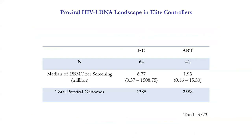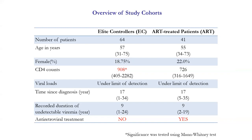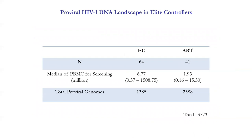Our definition of elite controller in this study is a patient with undetectable viremia for at least one year, with at most one or two viral load blips at a maximum of less than 400 copies during any blip. Most of our patients have had undetectable viral load for an average of nine years, up to 24 years, with barely any detectable viral load — they are doing very well.